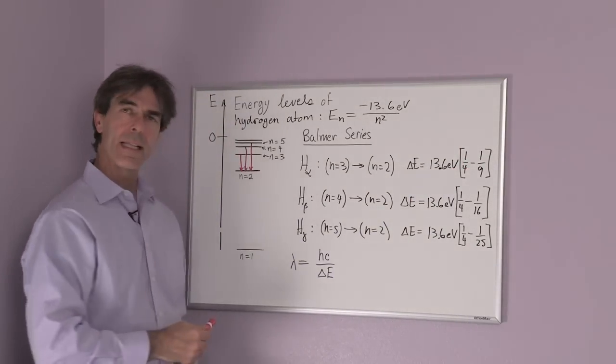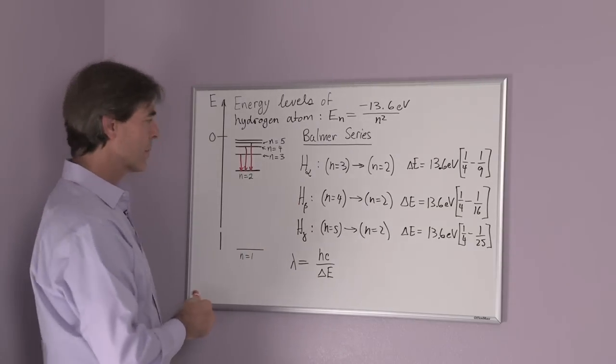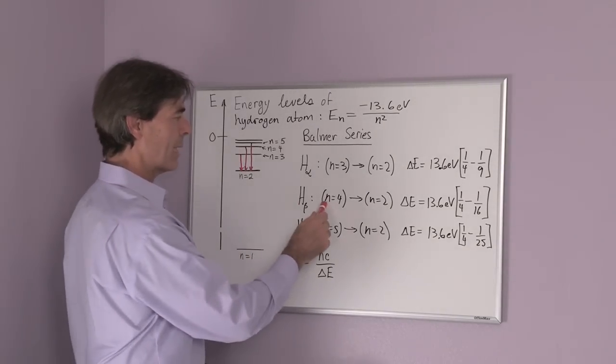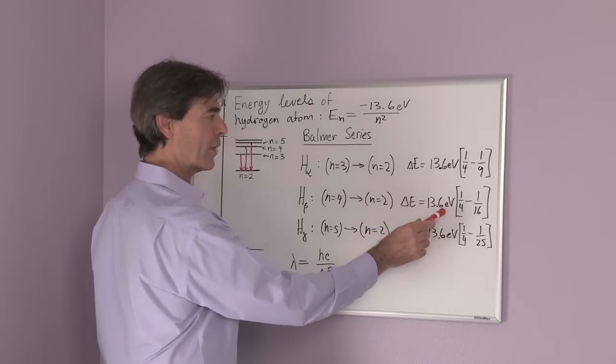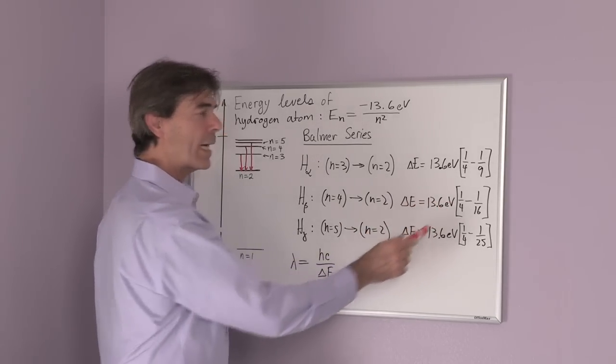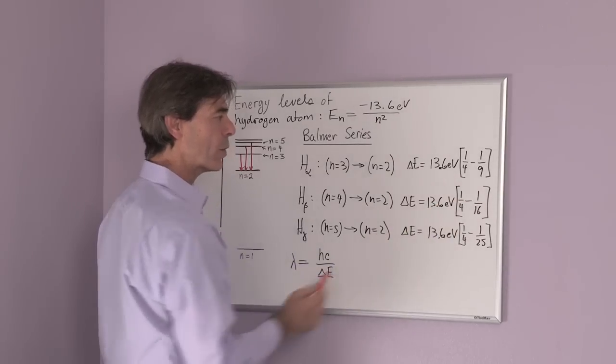The second line in the Boehmer series is called H beta, and H beta is from the n equals 4 to n equals 2, and that energy difference is 13.6 electron volts times the difference of 1 over 2 squared minus 1 over 4 squared.